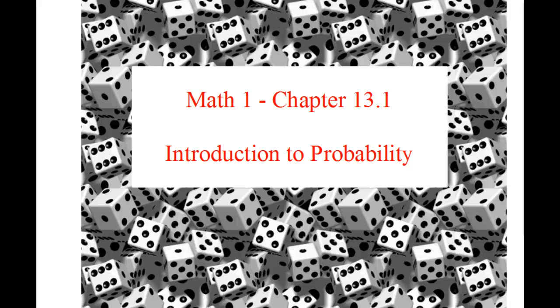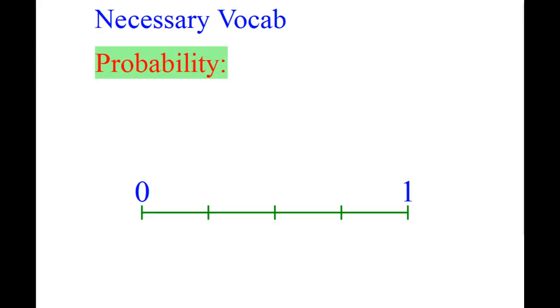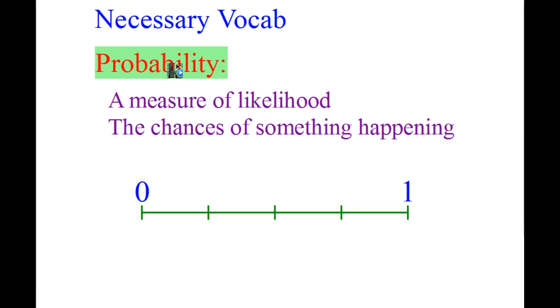Probability. Let's get going with this. This is always a little more fun. Get some games going, see how good you are at games, see the likelihood, see if things are fair. So let's talk about probability. What is probability? Probability is the measure of likelihood, or another way of saying it, the chance of something happening. The chances of something happening. We use these terms all the time, but we don't necessarily use them mathematically.